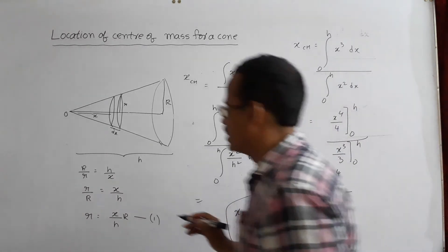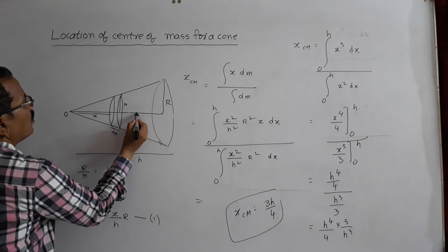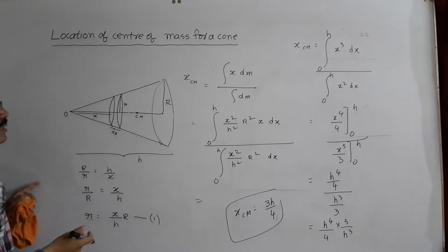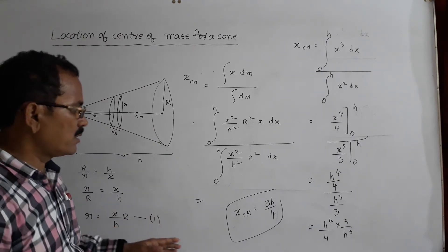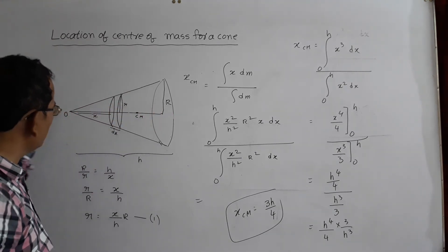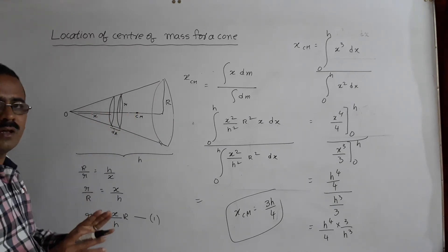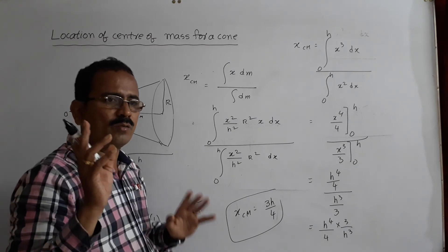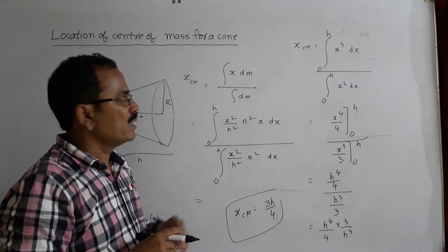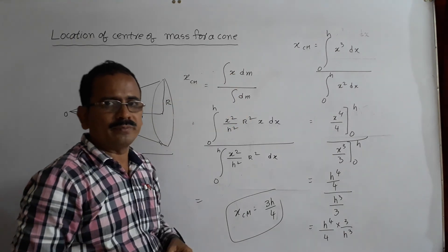So the center of mass is situated at a distance 3H/4 from the vertex, on the axis of symmetry. This is the position of the center of mass. In this way, you can find the center of mass of a uniform cone using the method of integration: Hcm = integral of x·dm divided by integral of dm.